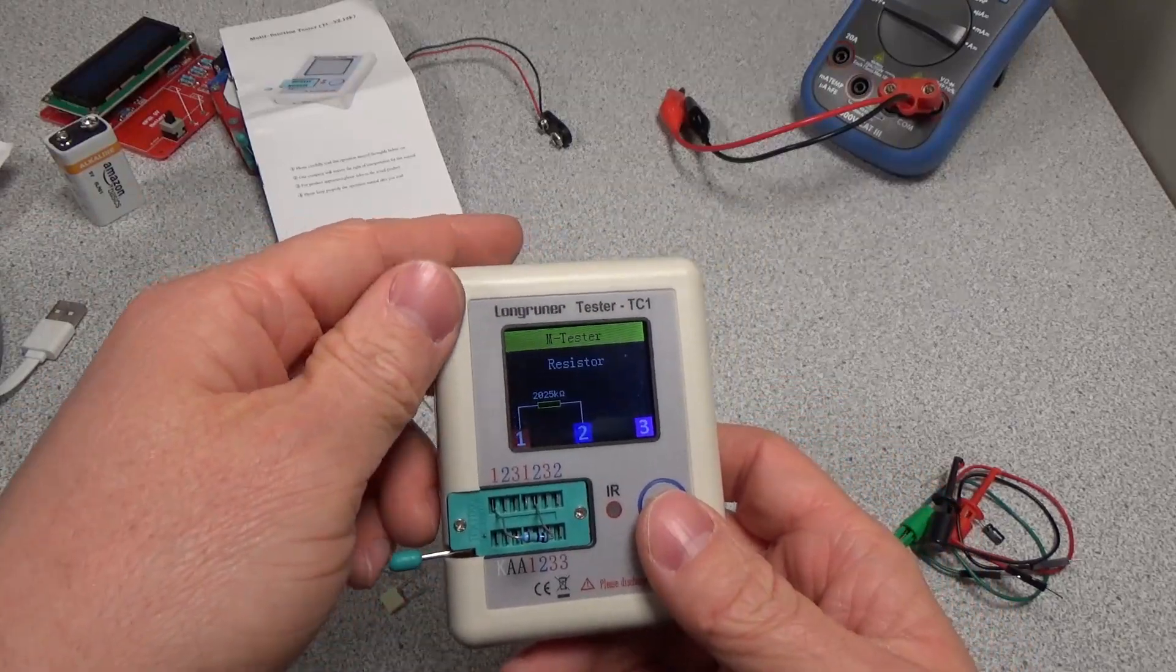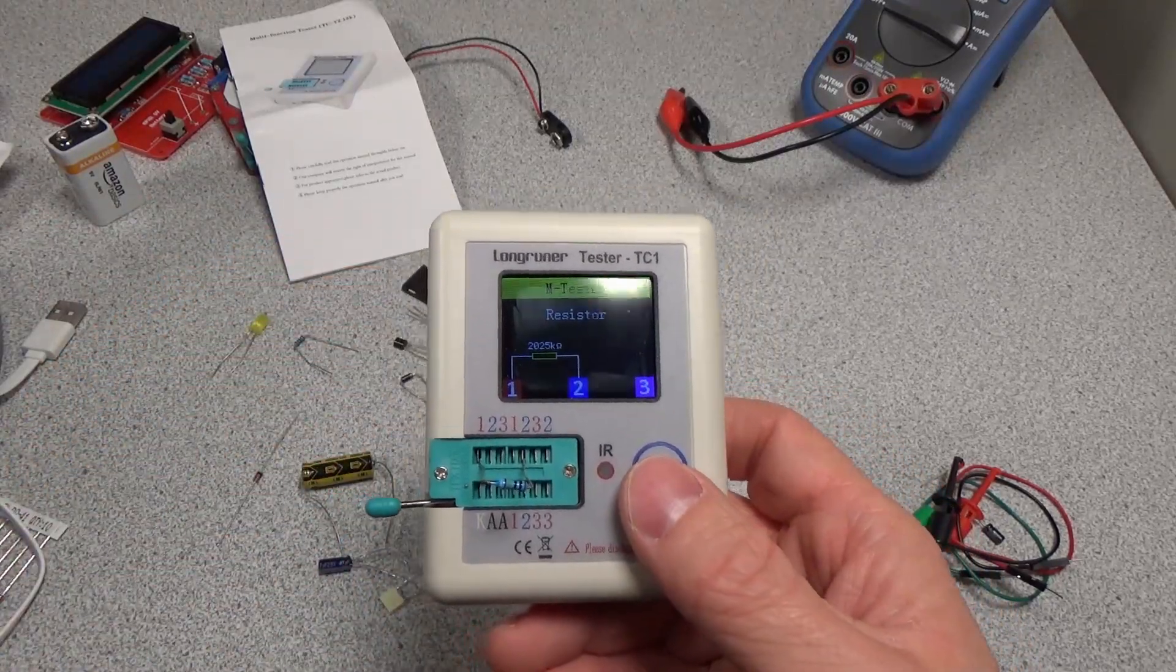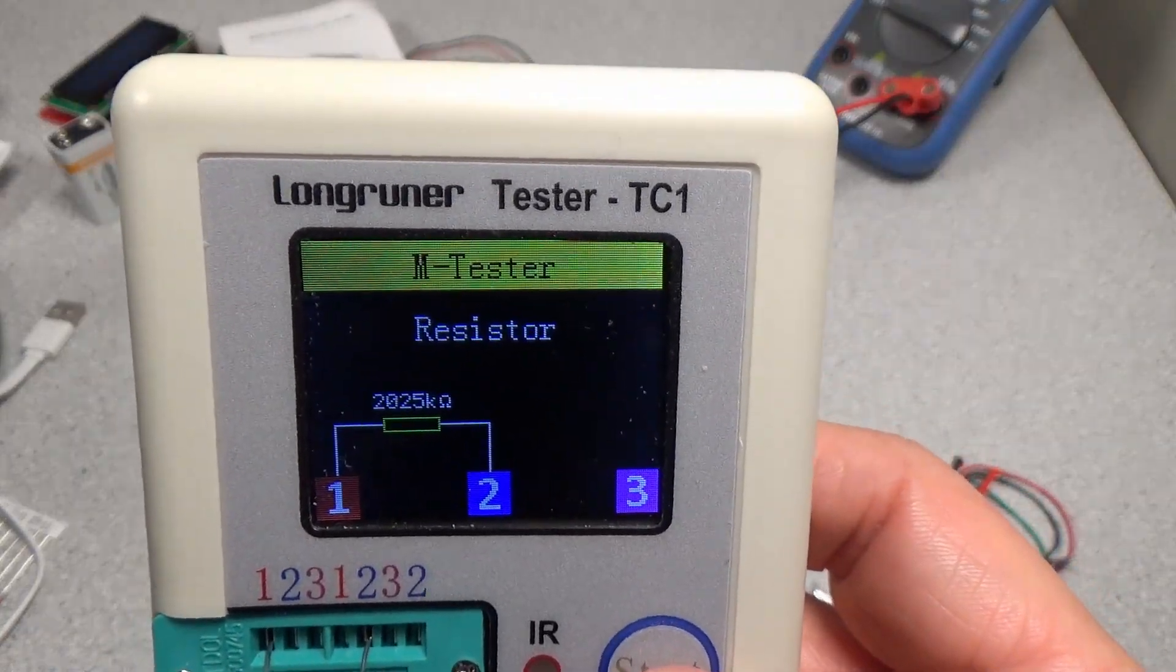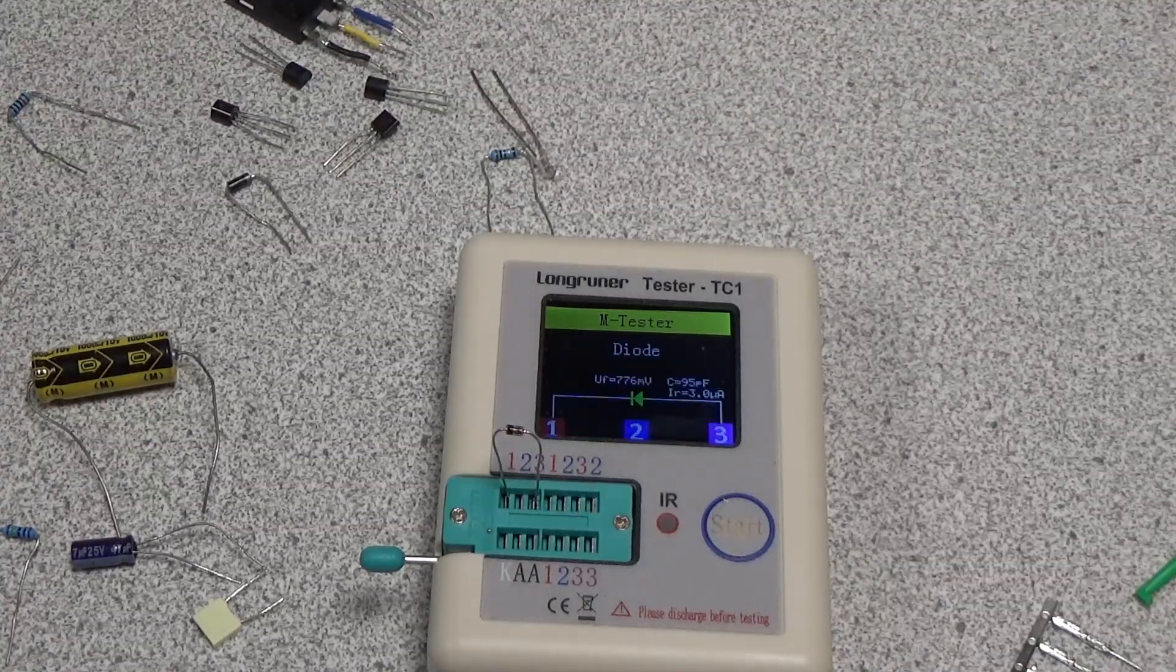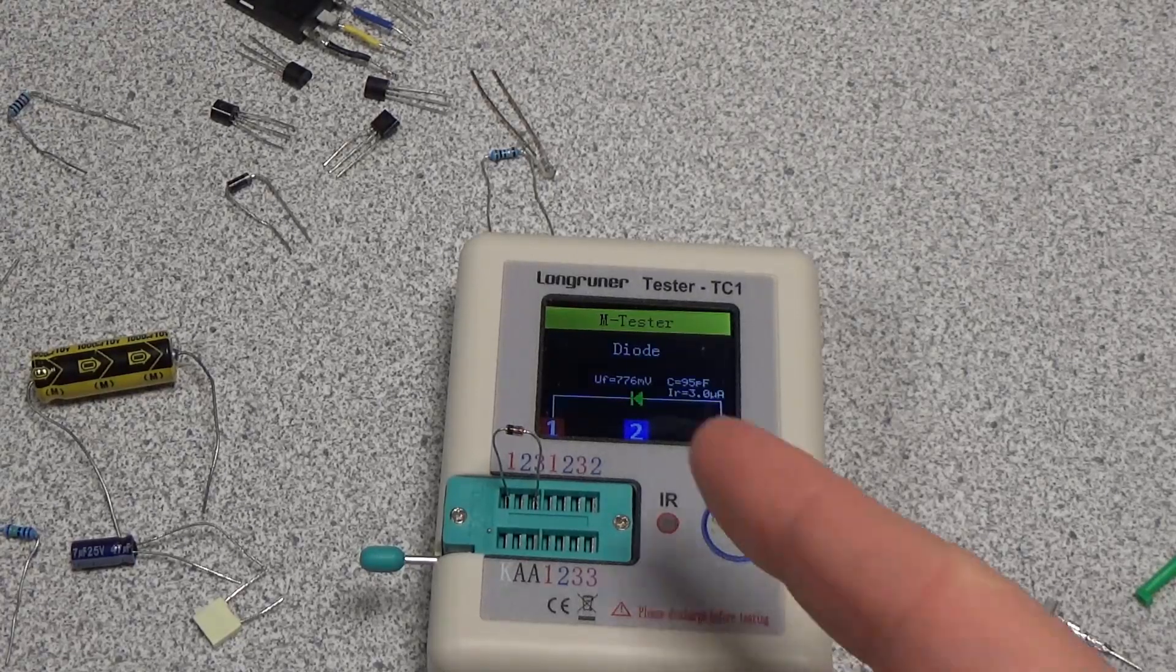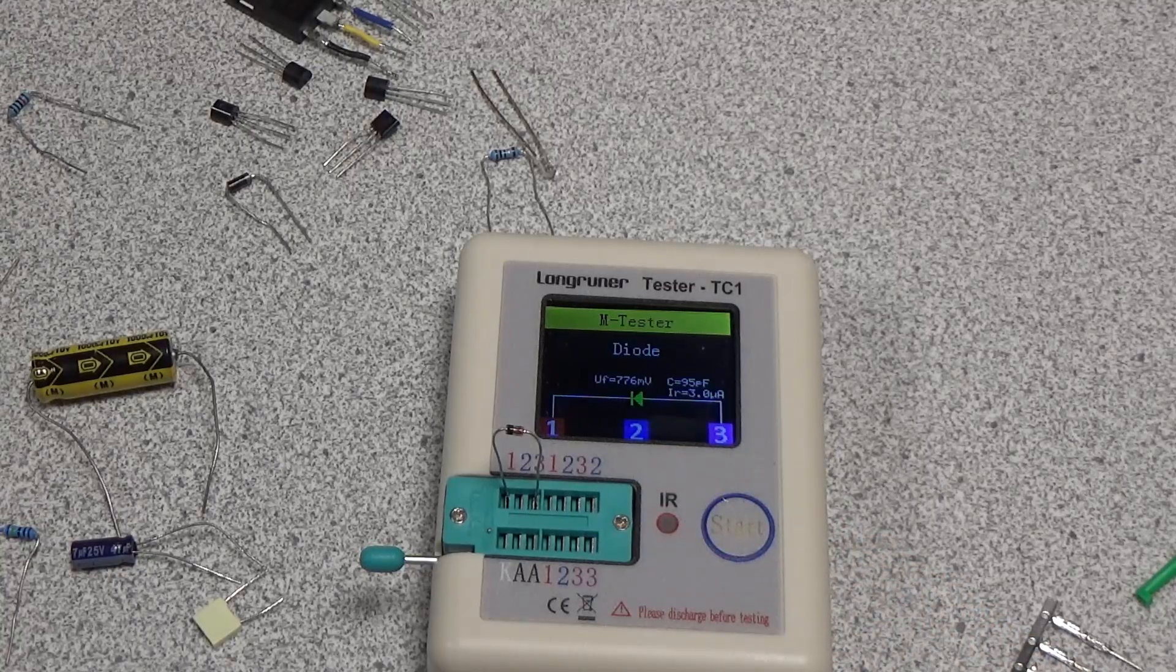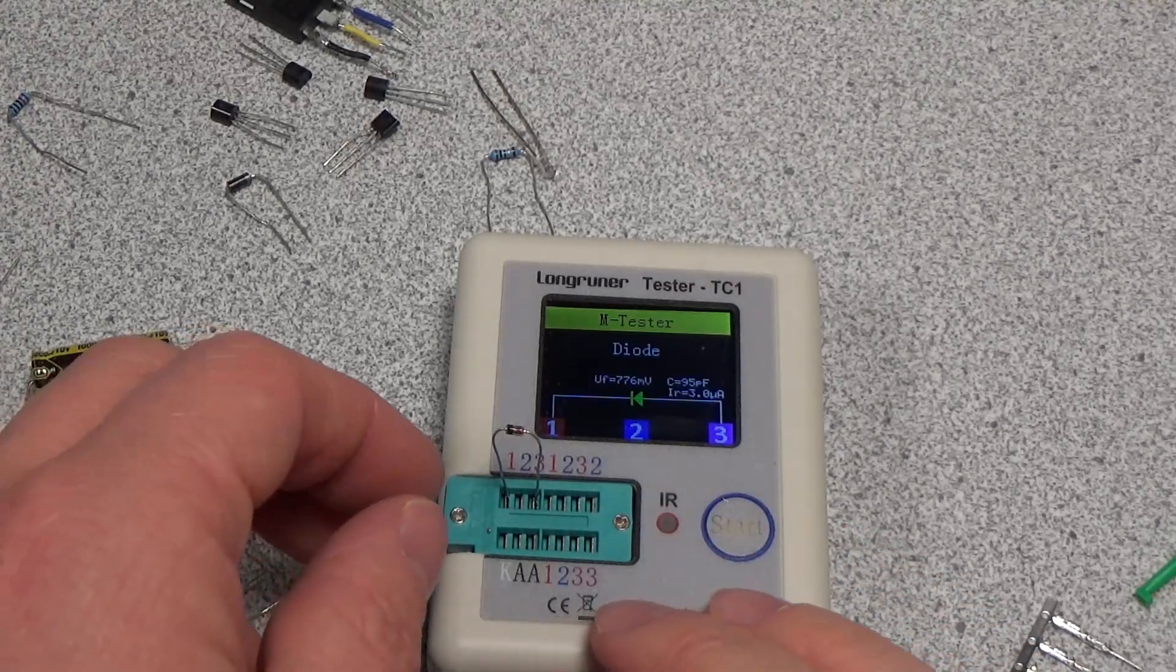Make sure you can see that. So this is a Schottky diode, supposed to have a low forward voltage. It says 776 millivolts, which isn't very good. So this actually may be a zener diode.